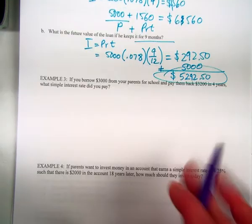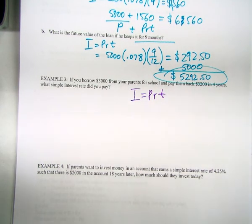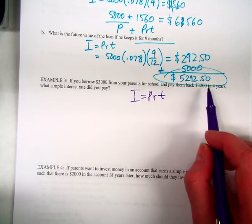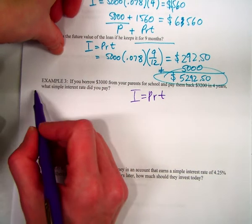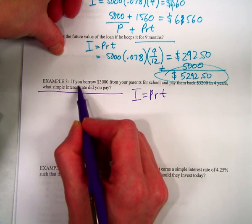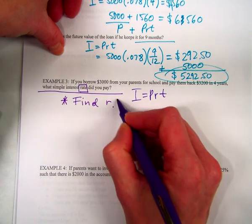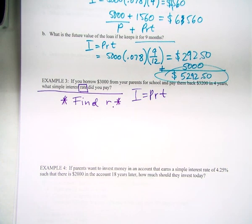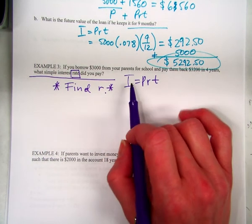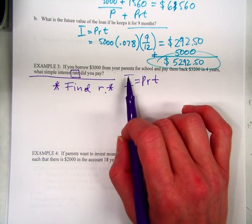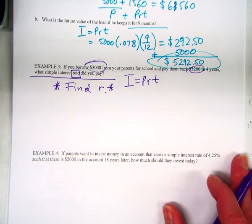In the next example, you're still using the same formula, but now if you borrow $3,000 from your parents, pay them back $3,200 after four years, what simple interest rate did you pay? So in this example, write yourself a little note, this is how you would find R. That's the rate in this problem. So before we can actually plug stuff in, we need to figure out what the interest is. And you do that by looking, okay, this is how much you borrowed, this is how much you're going to pay back. What's the interest?